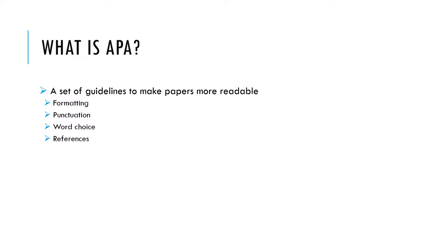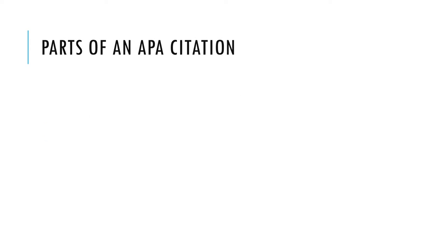Let's focus on that last piece: references. APA citations look a little different based on what type of source you're working with, such as a book or a website, but they are all made of the same parts: Who, When, What, and Where.